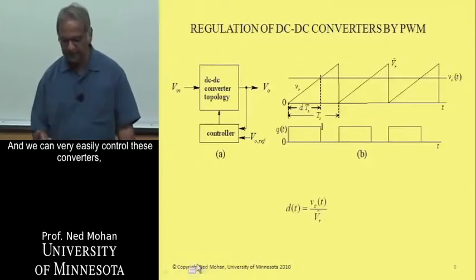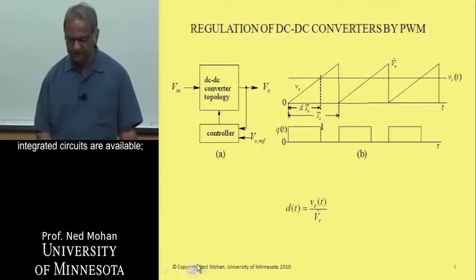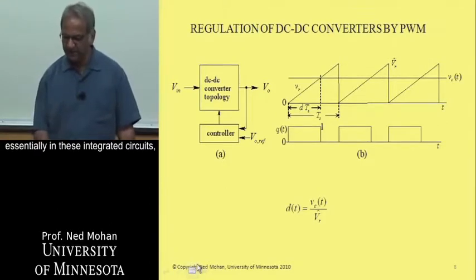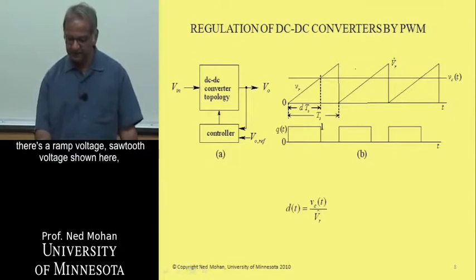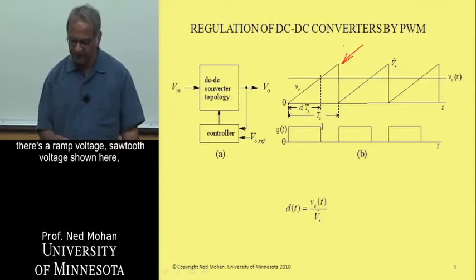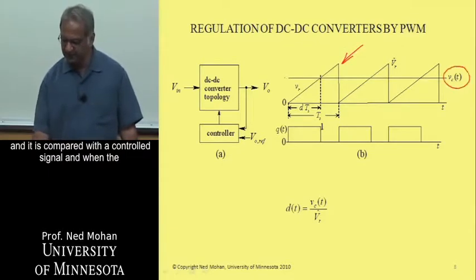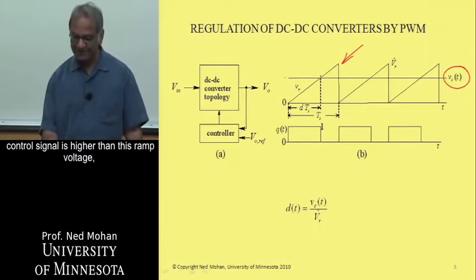And we can very easily control these converters. Integrated circuits are available. Essentially, in these integrated circuits, there's a ramp voltage, sawtooth voltage shown here, and it is compared with a control signal. And when the control signal is higher than this ramp voltage, the transistor is to be gated on.